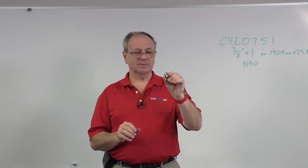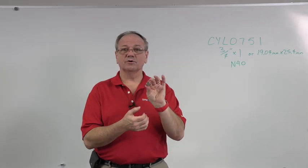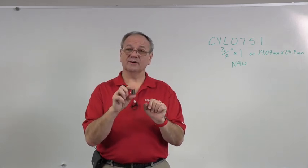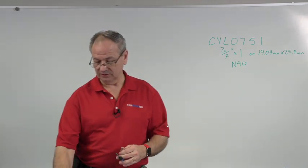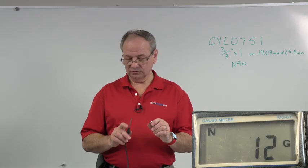So we're going to start by looking at this magnet. This is our CYL cylinder magnet, and it's three quarters of an inch in diameter or 19.04 millimeters and it is one inch long or 25.4 millimeters. And it's an N40, so it's just one of our basic magnets that a lot of people use for different things.